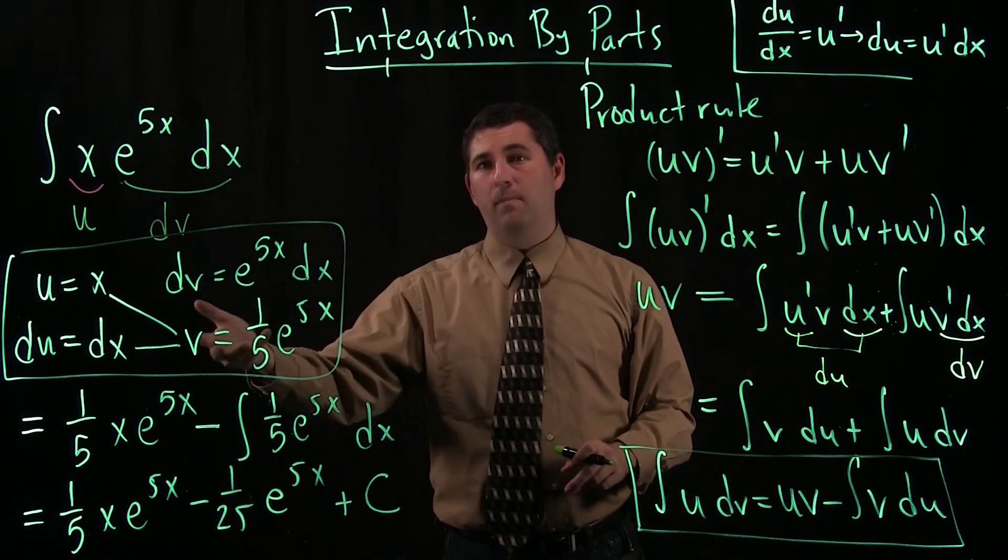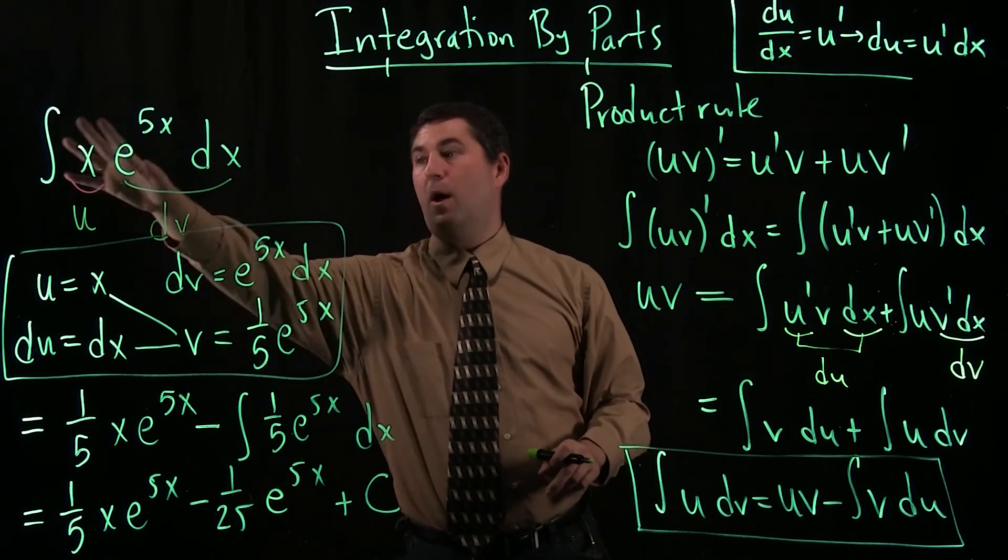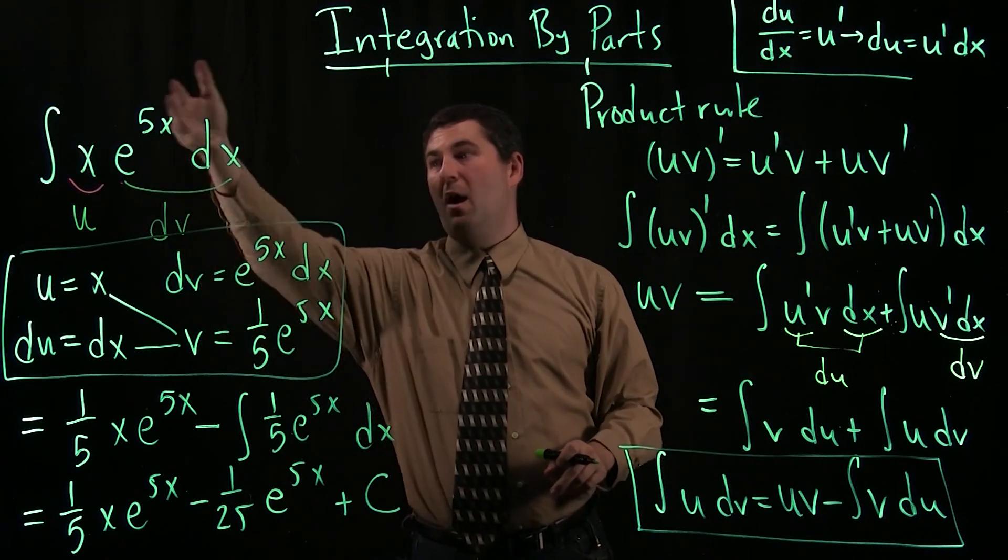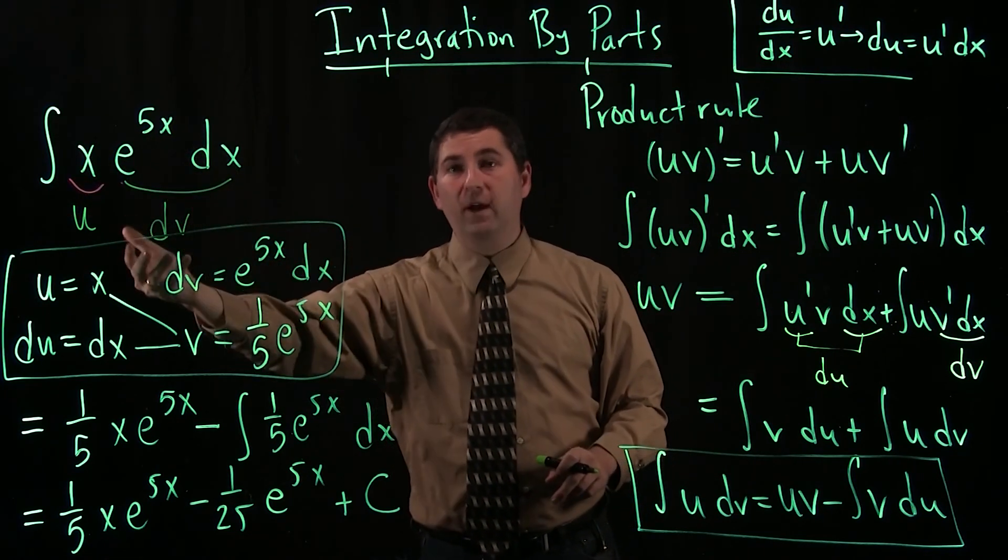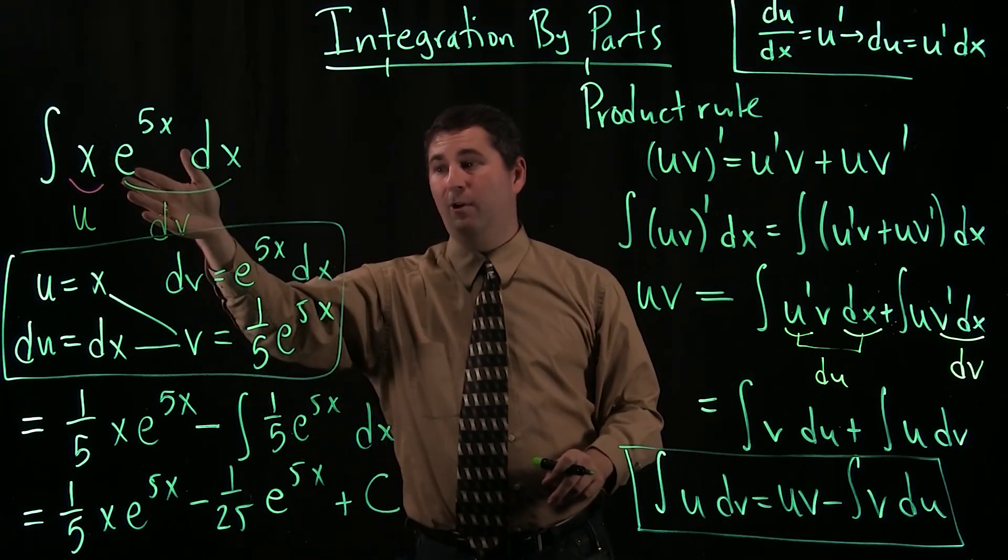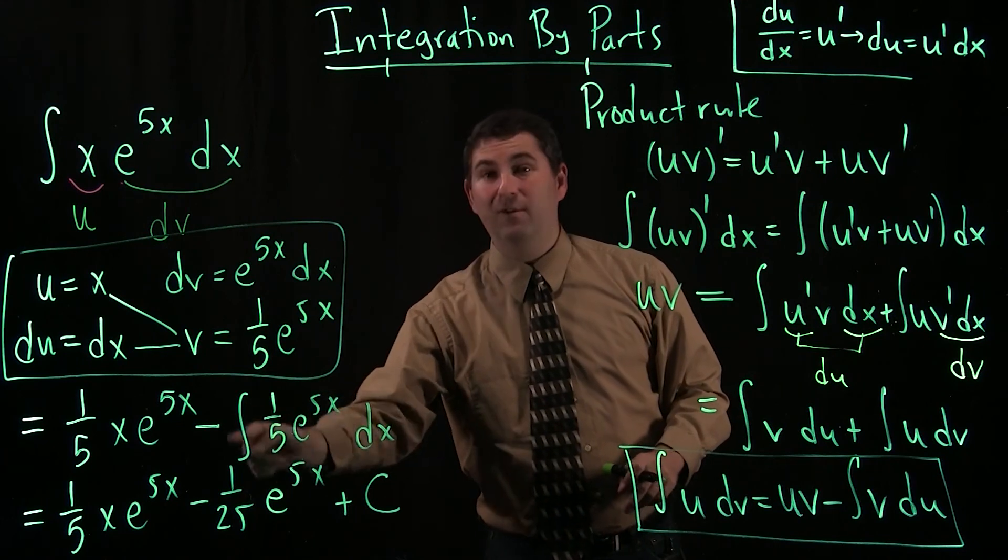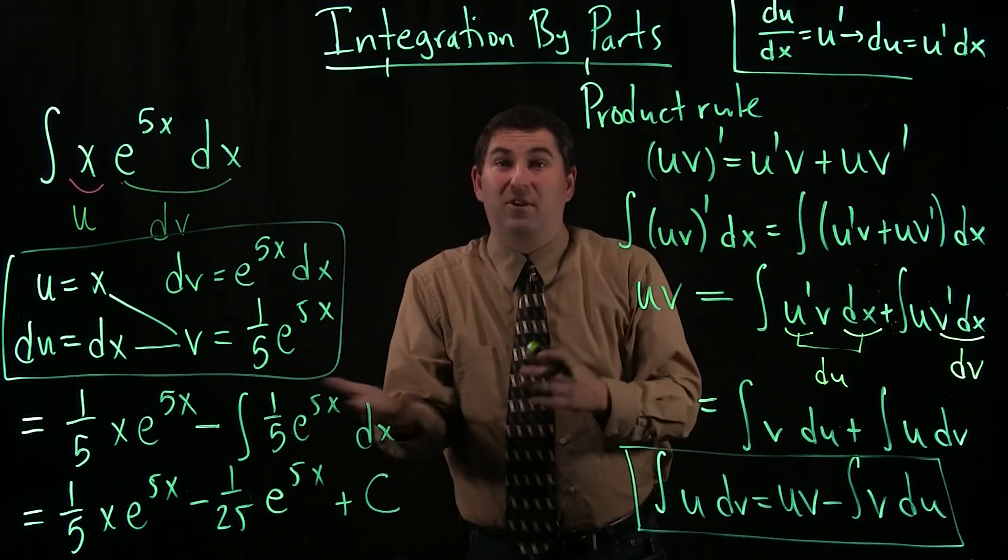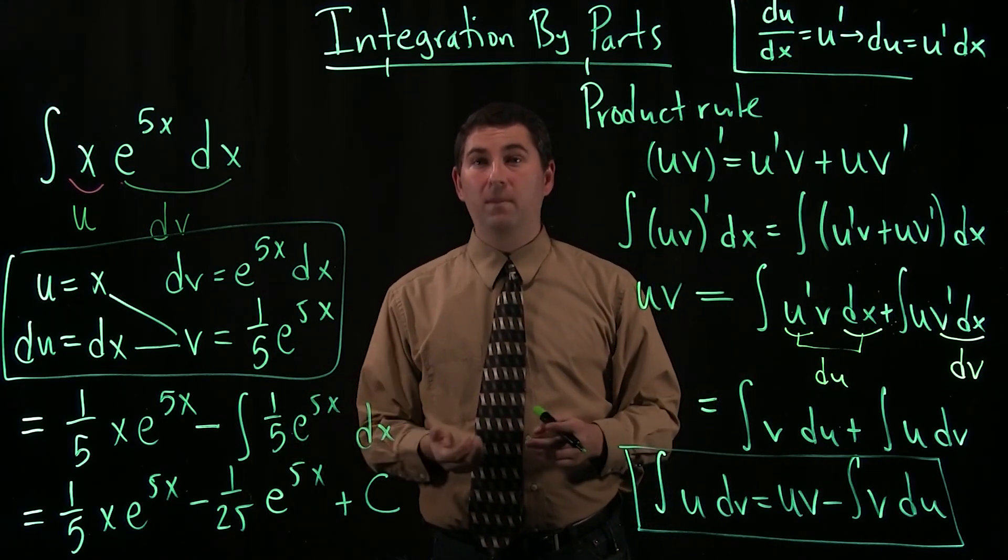Okay? So, this is how we can use integration by parts when we have some sort of a polynomial times some other function like an exponential or a trig function. And it's going to allow us to reduce the degree of that polynomial so that eventually we end up with an antiderivative where we can actually just compute it directly using a known formula.